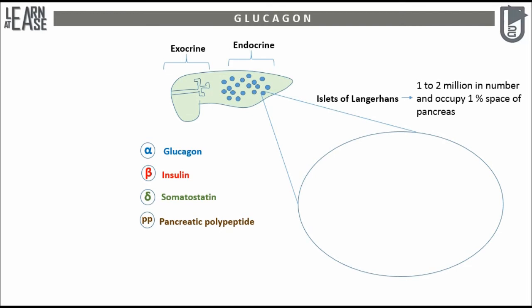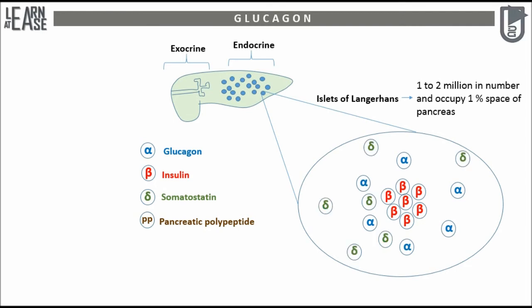The arrangement of these cells in the islets of Langerhans is remarkable. In the center there is a cluster of beta cells, whereas alpha cells are arranged in their periphery. Delta and PP cells are scattered throughout the islets of Langerhans and do not show any specific arrangement.